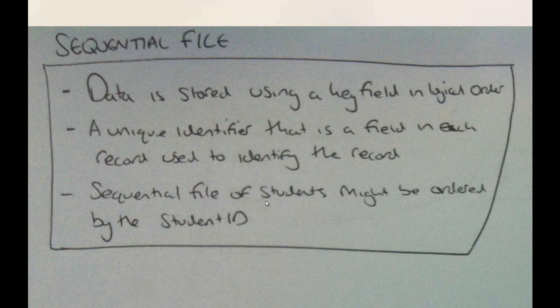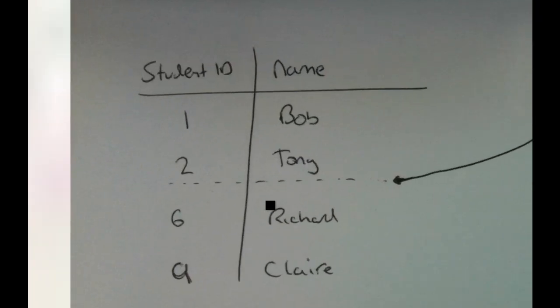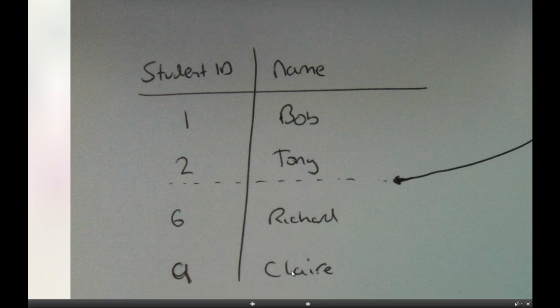The next thing we're going to look at is a sequential file. This is where data is stored using a key field in logical order. A key field is a unique identifier — a field that each record uses to identify itself. For example, you might have a student ID, and the sequential file of students might be ordered by student ID. So student ID 1 is Bob, student ID 2 is Tony, 6 is Richard, 9 is Claire — each is the key field, and they are in order.